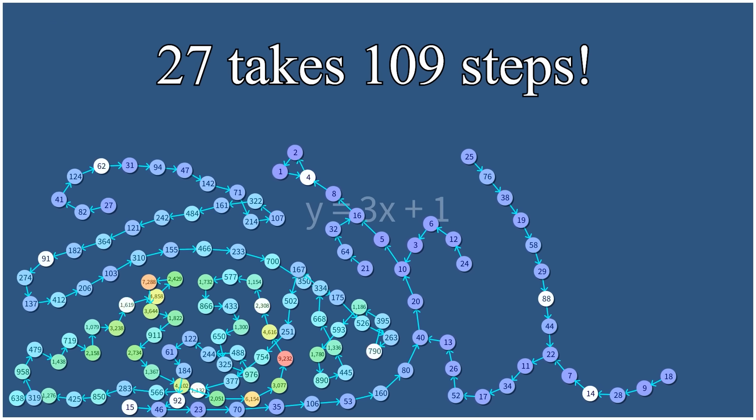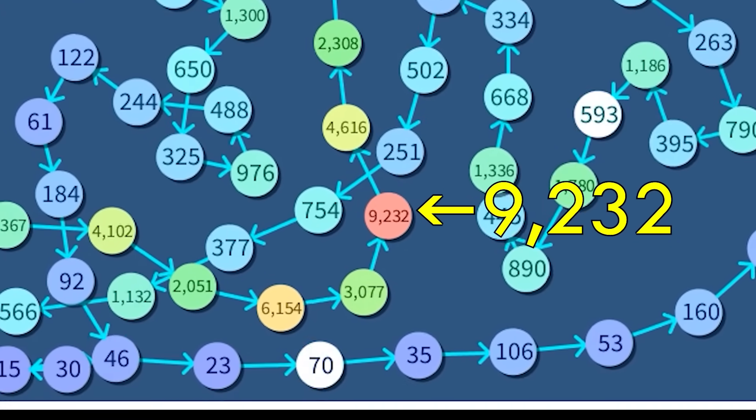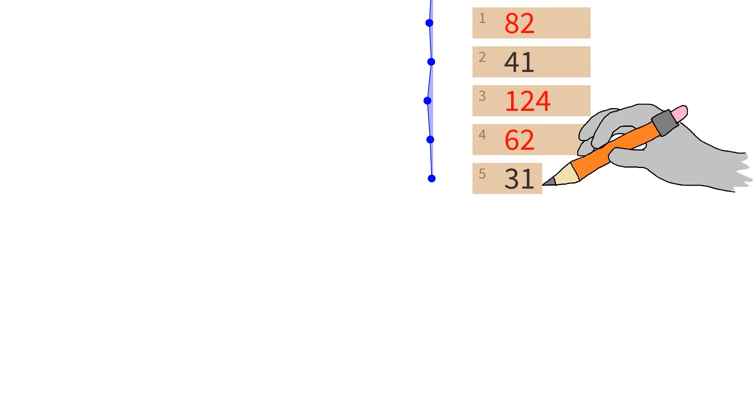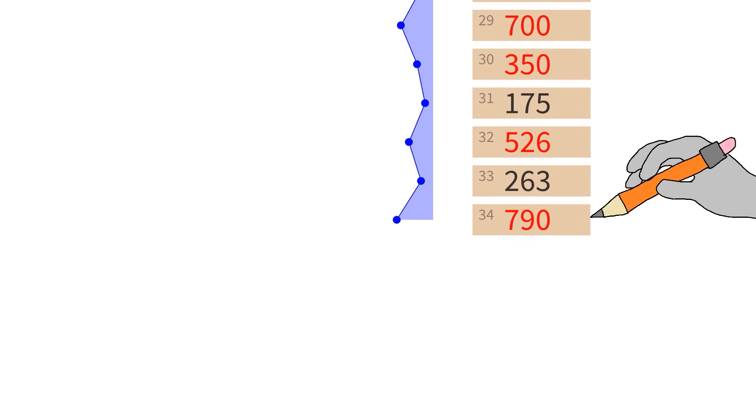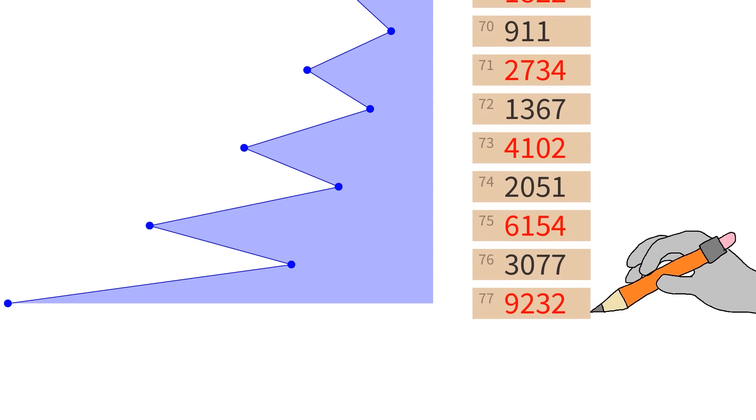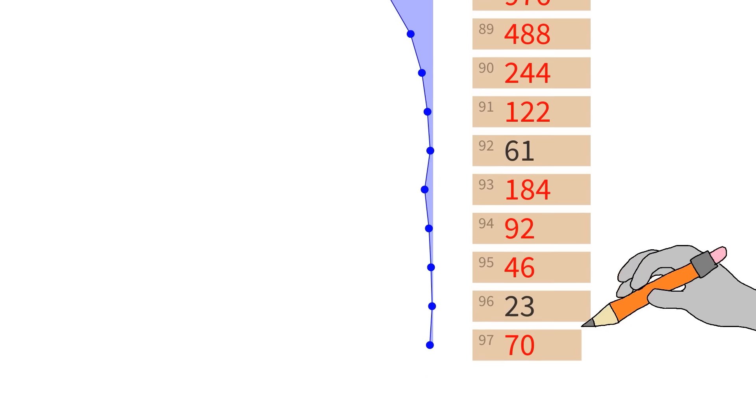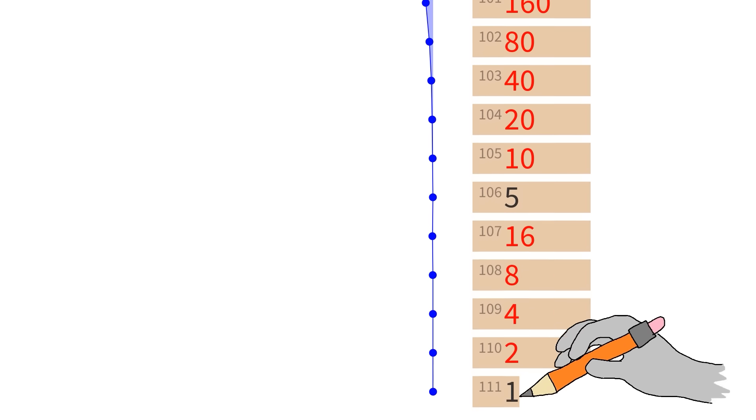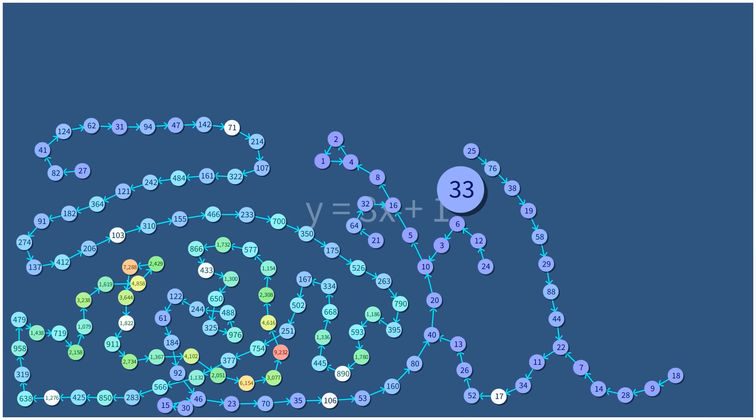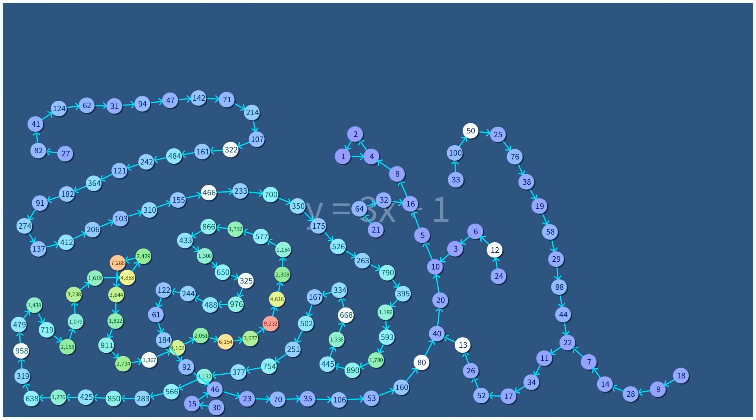Shockingly, it takes 109 steps to descend to 421, passing through a high point of 9232, about 3 quarters of the way through its journey. If you were calculating 27's path by hand, and you had gotten to that stage and no further, you might conclude that 27 explodes to infinity. But sure enough, it passes through a good amount of even numbers, which halve its value enough to bring it down to 1. So there's really no rhyme or reason for which numbers quickly reach 1, and which ones take an agonizingly long time to reach 1.